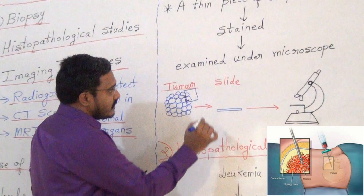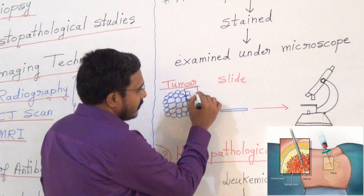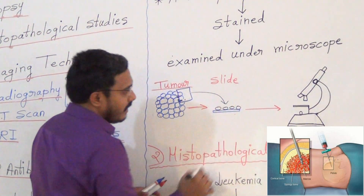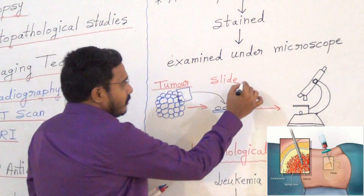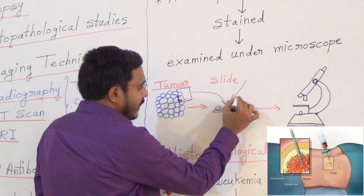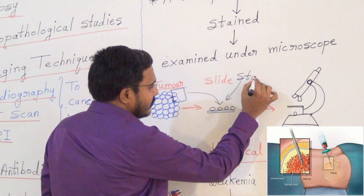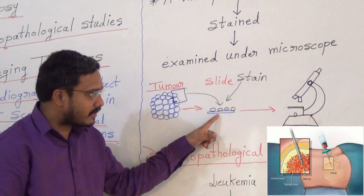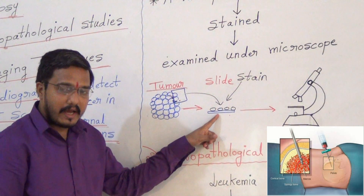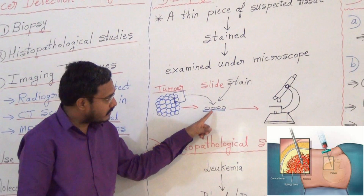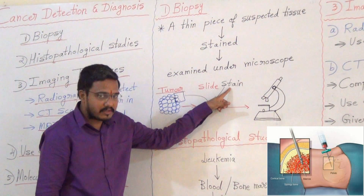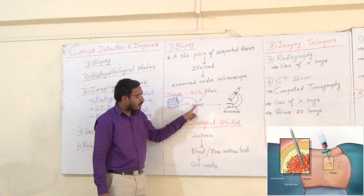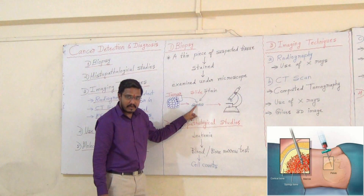A small piece is taken and placed onto a slide. Then, a stain is added to this slide. Remember: a small piece of the suspected tissue is taken and added on the slide, then stain is added. The role of the stain is for proper visualization of that particular object.